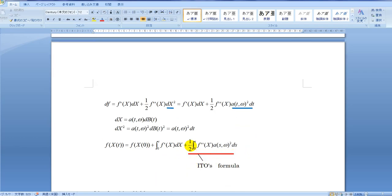Integrating df from 0 to T, the f(X) is expressed as follows. This is called the Ito's formula.